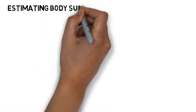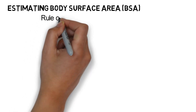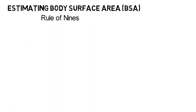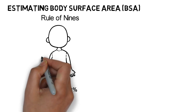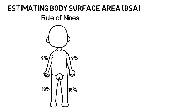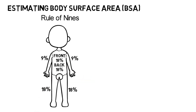First, we'll learn how to estimate the affected body surface area, or BSA. One method for estimating BSA is the Rule of Nines. Using the Rule of Nines, each leg represents 18% of total body surface area, or TBSA. Each arm represents 9%. The anterior and posterior trunk each represent 18%. The head represents 9%, leaving 1% for the genitalia and perineum.